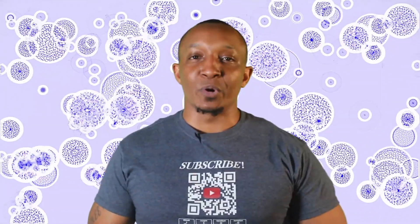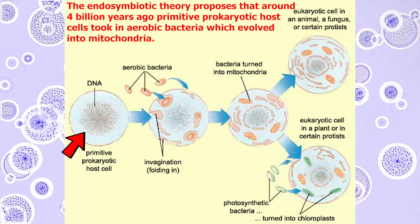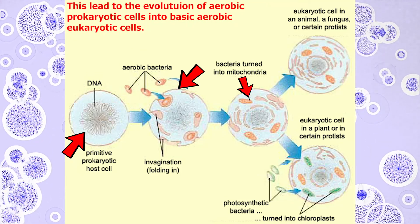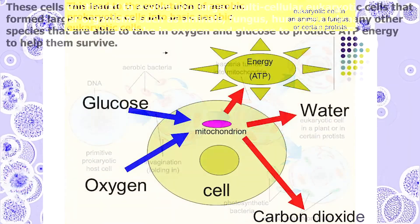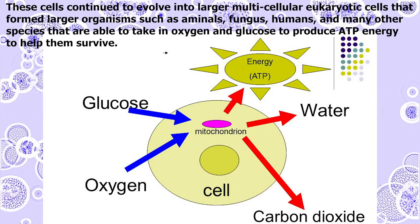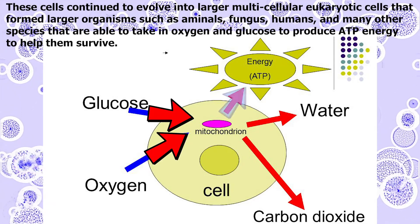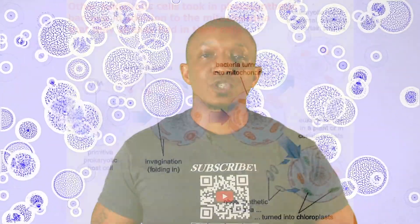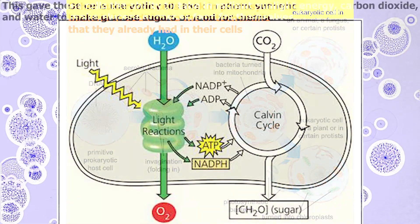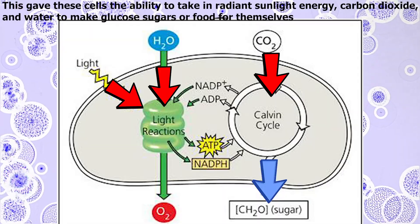Now for a quick summary: the endosymbiotic theory proposes that around four billion years ago, primitive prokaryotic host cells took in aerobic bacteria which evolved into mitochondria. This led to the evolution of aerobic prokaryotic cells into basic aerobic eukaryotic cells. These cells continued to evolve into larger multicellular eukaryotic cells that form larger organisms such as animals, fungi, and humans — organisms able to take in oxygen and glucose to produce ATP energy to survive. Other eukaryotic cells also took in photosynthetic bacteria in addition to the mitochondria they already had, giving these cells the ability to take in sunlight energy, carbon dioxide, and water to make glucose.